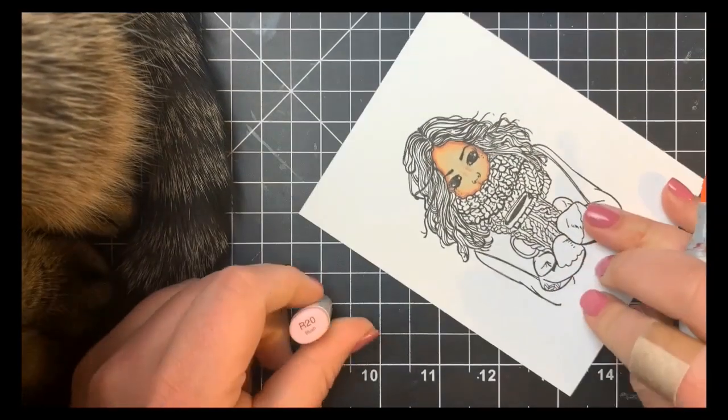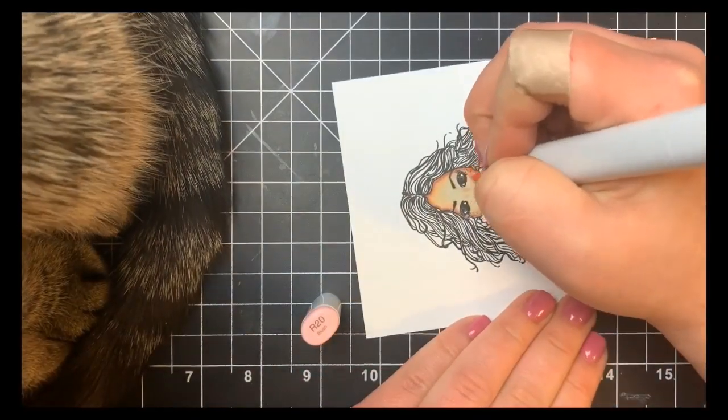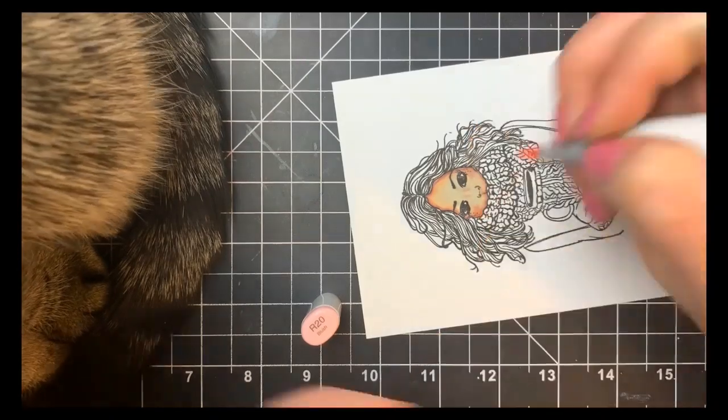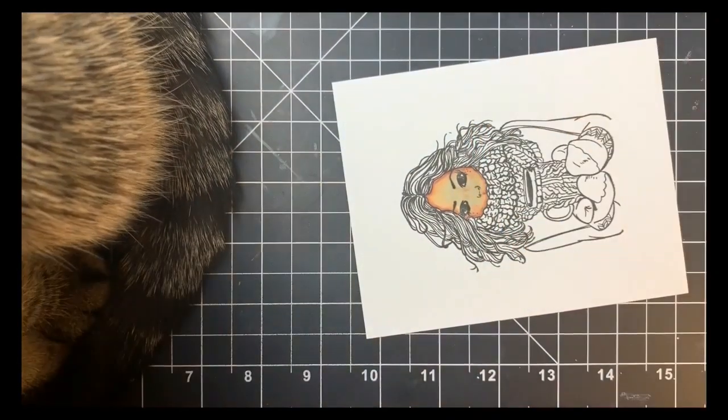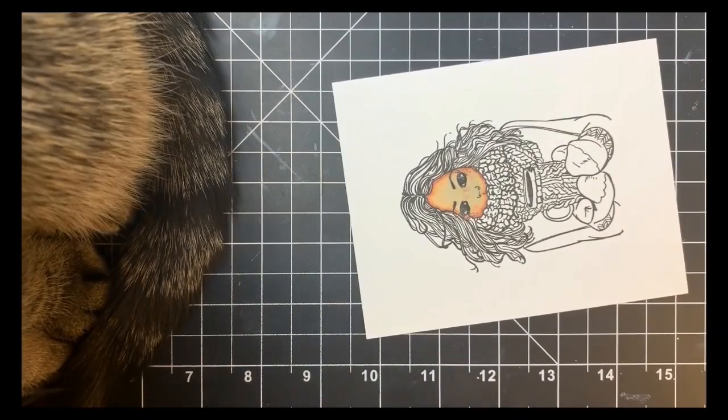Going in with the two midtones, then back to the lightest color. I brought in my R20 just to add a little bit of color to her cheeks, then brought back that E50 to blend that cheek color out.